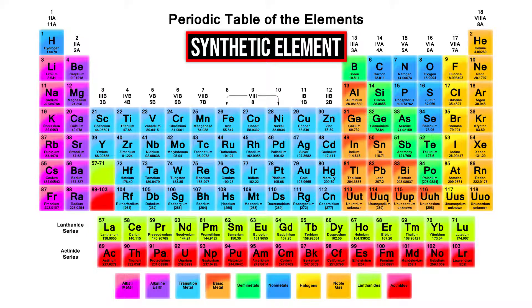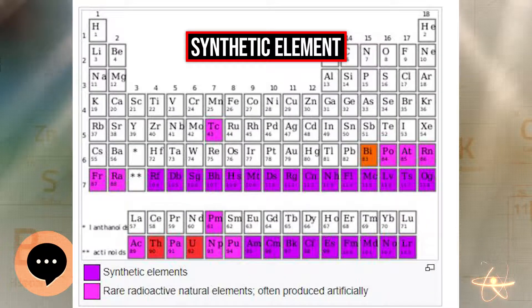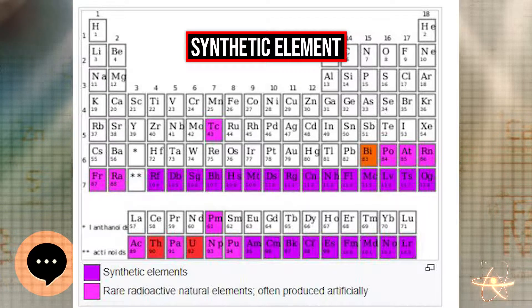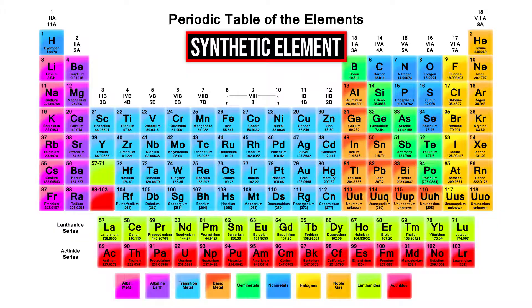However, the following elements are often produced through synthesis: technetium, promethium, astatine, neptunium, and plutonium were discovered through synthesis before being found in nature.